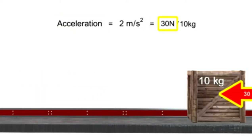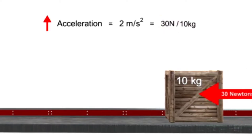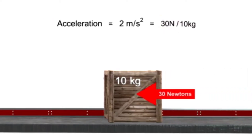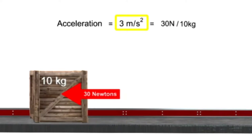If you push 10 newtons harder, the acceleration of the box will increase in direct proportion and becomes 3 meters per second squared.